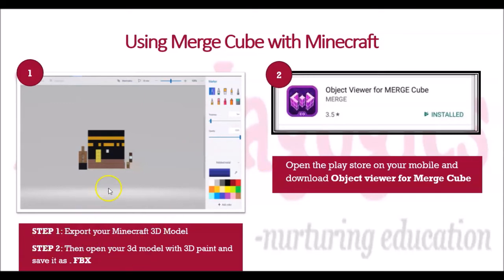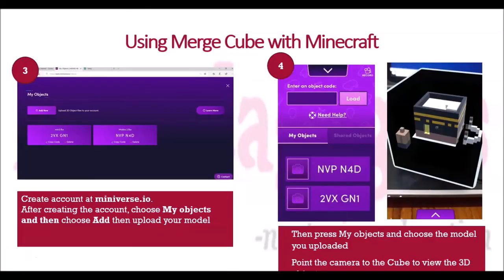For using Merge Cube with Minecraft, the two steps you have already done are: exporting your 3D Minecraft model, and then opening it with Paint 3D and saving it as .fbx. The next step is you have to download the Object Viewer from Merge Cube from the Play Store on your mobile. Then you have to create an account at miniverse.io. After that you can choose My Object and then choose Add New to upload your model. You can add the object code, click upon it and load, and then view it by rotating the model.